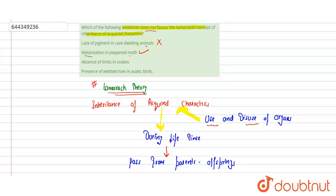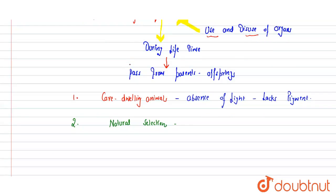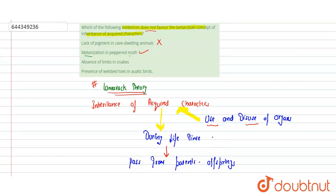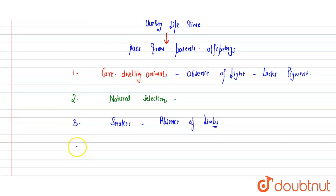The third option is absence of limbs in snakes. Limbs in snakes were never useful — they were not used by pythons or snakes. Snakes have rudimentary pelvic girdles but eventually lost their limbs due to disuse. Although limbs were internally present in some form, there were no functional limbs externally. This is also an example of use and disuse of organs, so this is an incorrect option.